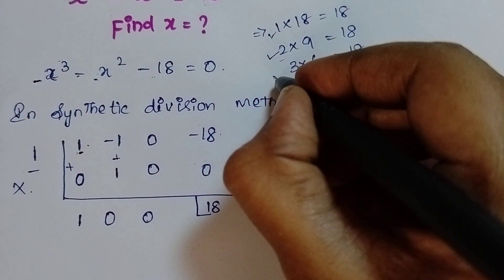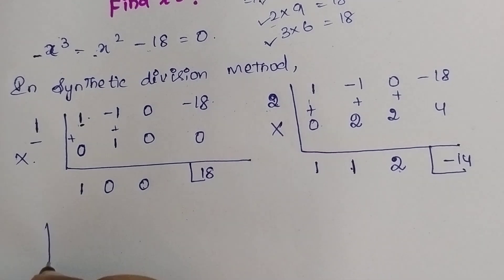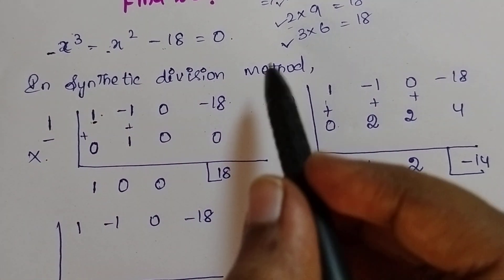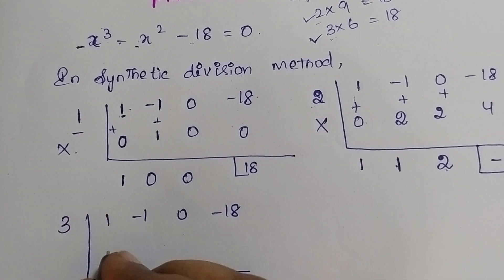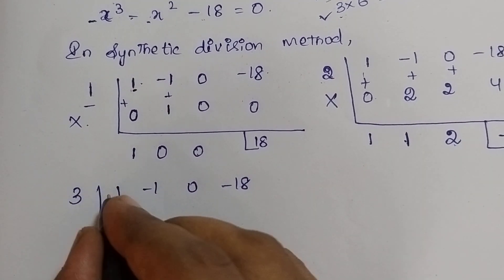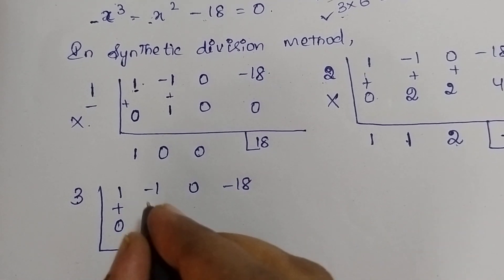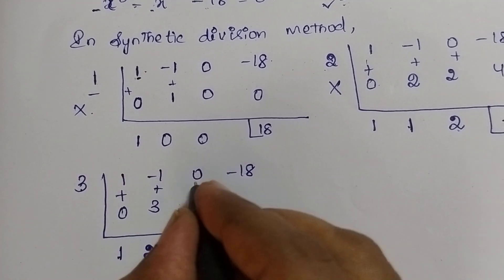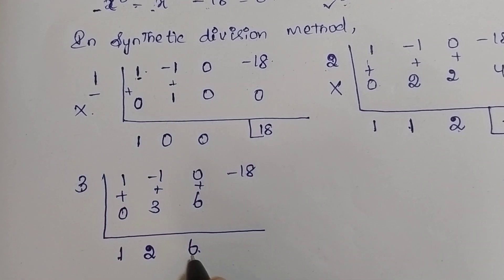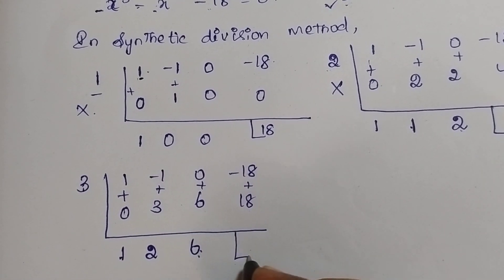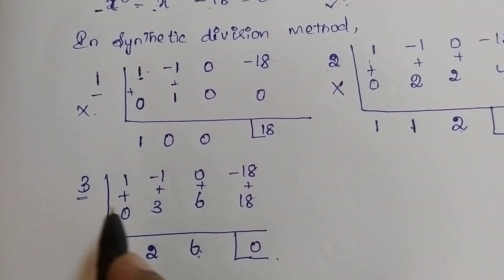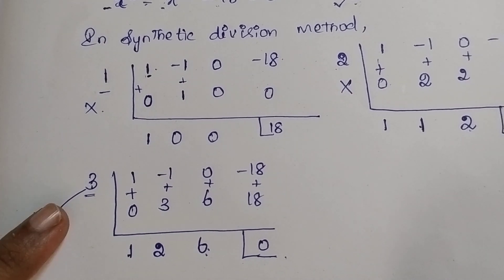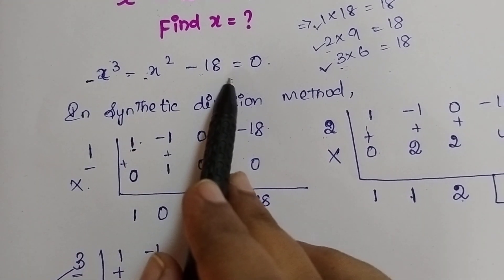So let's move to the number 3 and check with that. The numbers are 1, minus 1, 0, minus 18, and let's consider the factor as 3. Put 0 defaultly. 3: if I add these two I get 1. 3 into 1 is 3. If I add these two, I get 2. 3 into 2 is 6. If I add these two, 3 into 6 is 18. If I add these two, I will get 0. So 3 makes this equation equal to 0. Therefore, x is equal to 3 is one of the factors of this equation.